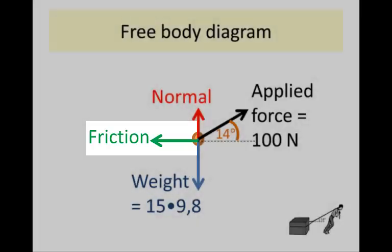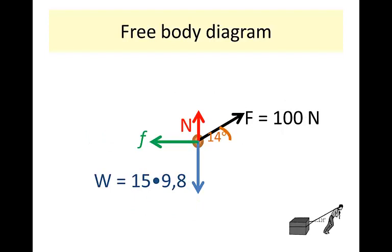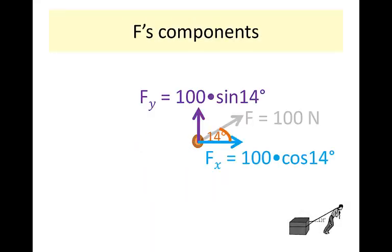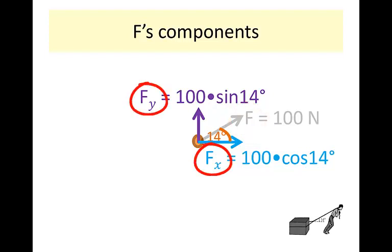We simplify the diagram by labelling each force with its first letter: F, N, Ff, and W. It is easier to solve the problem using only X and Y vectors — horizontal and vertical. The applied force F is at an angle, so it causes a problem. We resolve F into its X and Y components, replacing the F vector with the two component vectors that together add up to F.